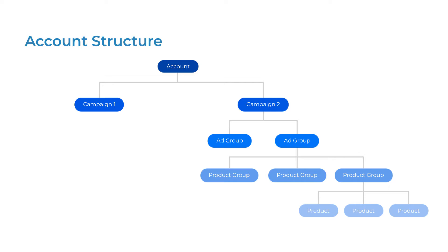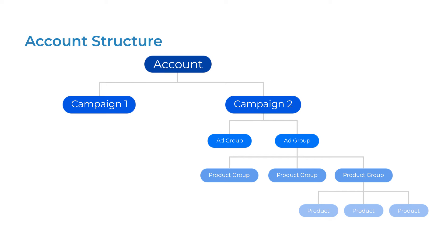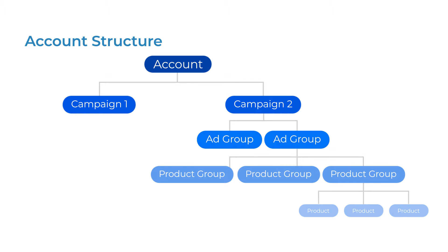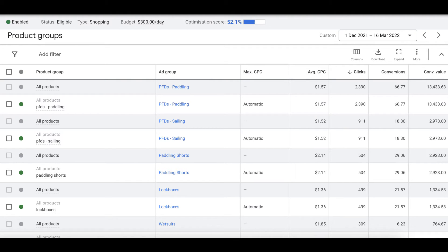Let's start with how campaign structures look starting at the account level. This is the hierarchy that you will grow familiar with over time. Your account contains multiple shopping campaigns, and within those shopping campaigns you have ad groups. Ad groups then contain product groups, which are comprised of your individual products. This structure allows you to organize your products into themes and groups, which is far easier to manage. It also allows you to see which of your products or categories are performing well or not.